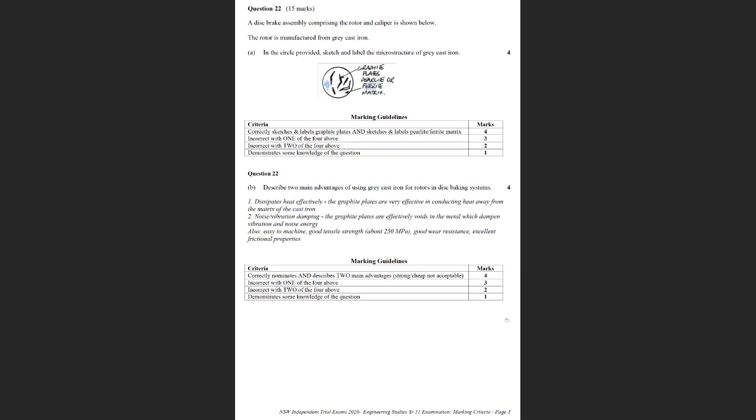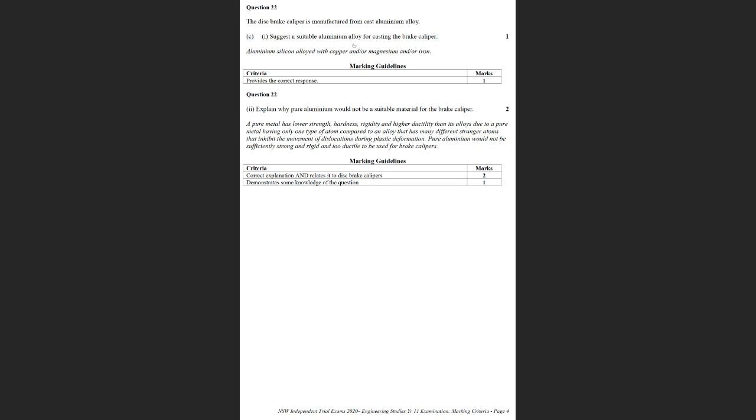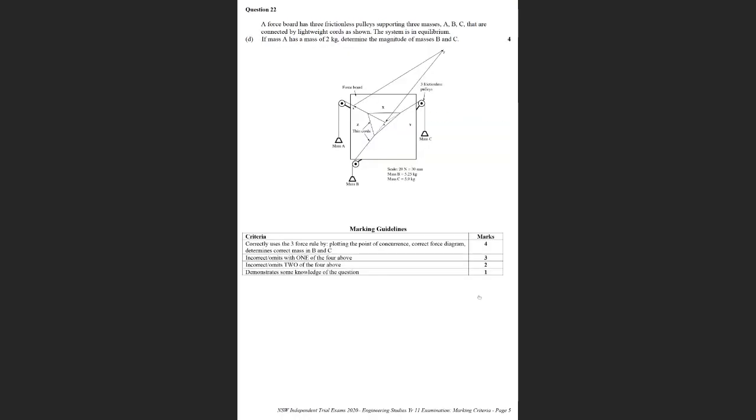Question 8, suggest a suitable alloy for casting the brake caliper. It's an aluminum alloy, and I was after silicon. Silicon is used for cast aluminum, but I would have accepted any of those too. Explain why pure aluminum would not be suitable. Pure metals are much weaker than alloys because they haven't got the stranger atoms which pin dislocations. You've got to mention that in your answer.